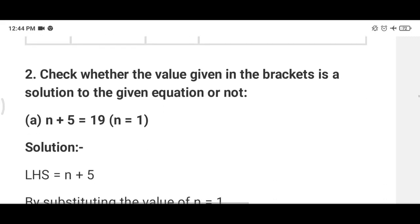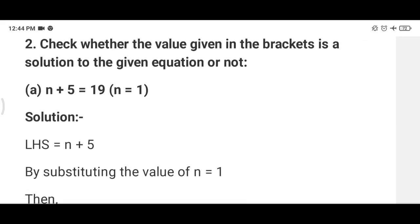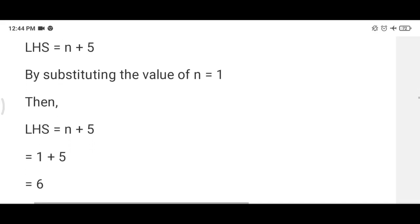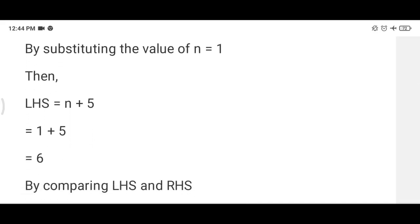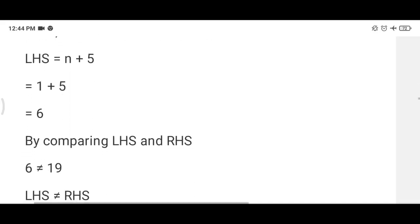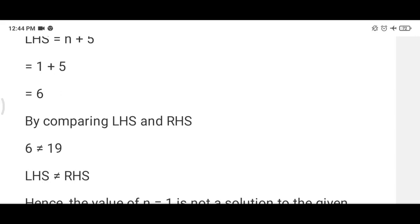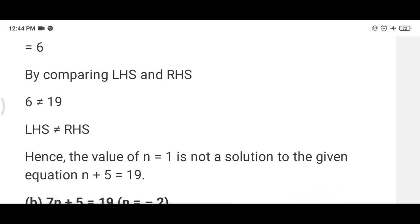Now question number 2, you have to put the values given in the bracket, and then you have to write is it solution or not. n plus 5 is equal to 19. When we put n equals 1, then 1 plus 5 is 6, which is not equal to 19. So here we will write no, n equal 1 is not the solution.